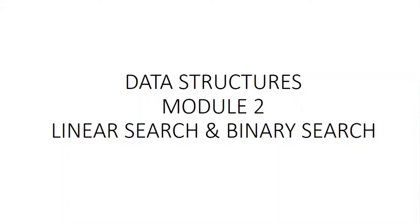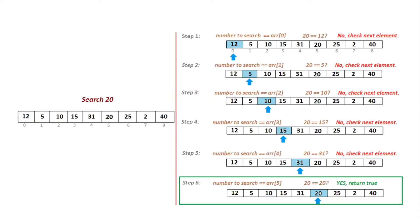In this video we are going to discuss searching operations. We will first discuss linear search, then binary search. Linear search has already been covered in Programming in C. Linear search means searching each element in index order — index zero, one, two, three, and so on.